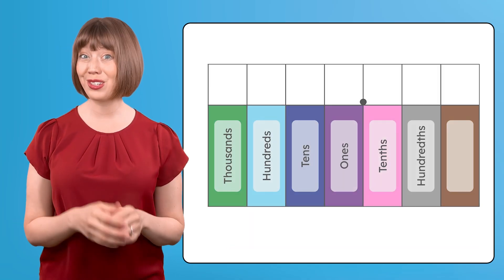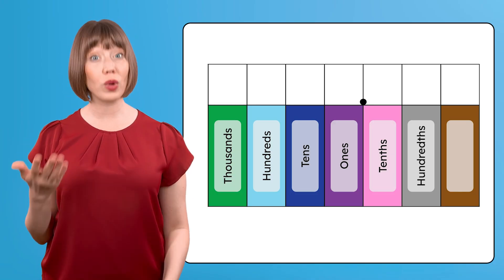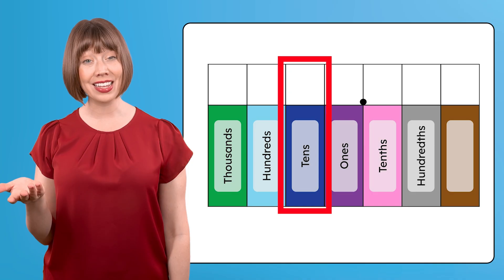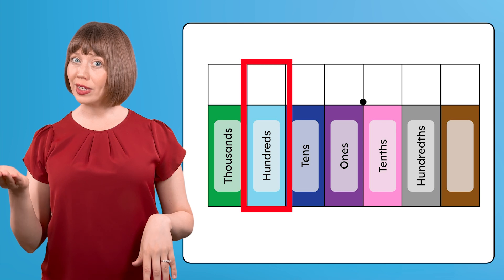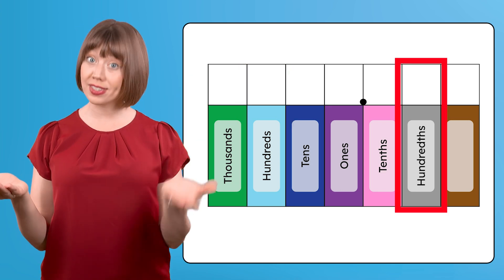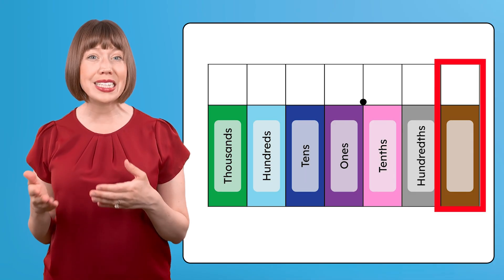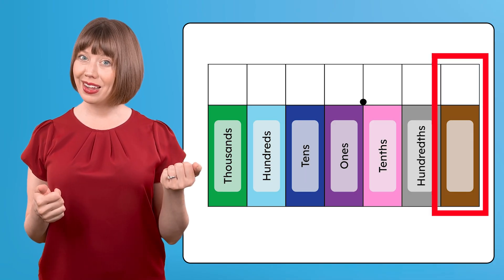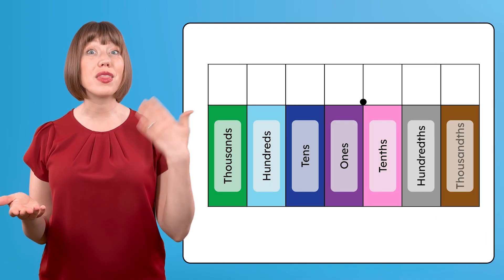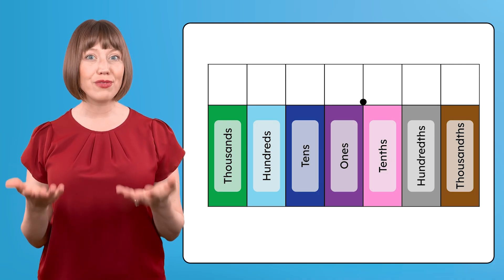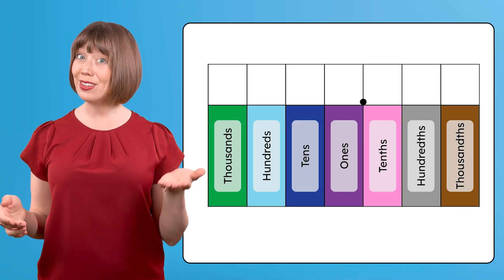There's a pattern to the way whole number and decimal place values are named. On the whole number side of the ones place is the tens, and on the decimal side is tenths. Then we have hundreds and hundredths. Next is thousands — and what do you think the matching decimal place value is named? That's right. It continues the same pattern, so it's called the thousandths place. Each decimal place value name is like the whole number place value name, but with a 'th' at the end.